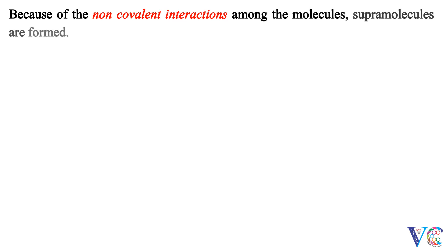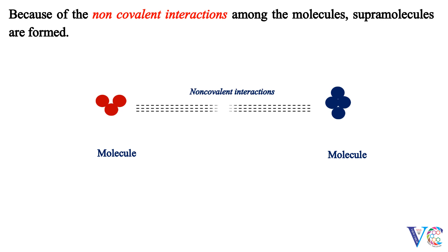Because of the non-covalent interactions among the molecules, supramolecules are formed. Atoms combine to form molecules. Non-covalent interactions between the molecules lead to the formation of supramolecules.